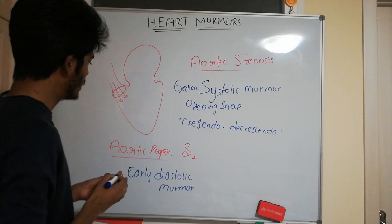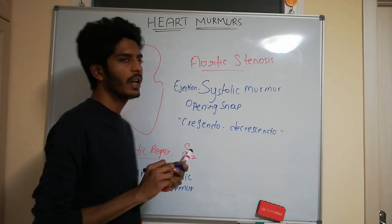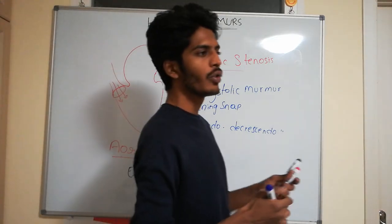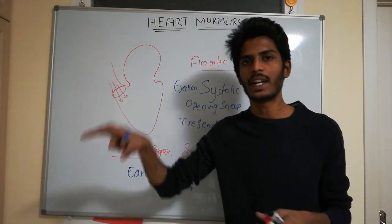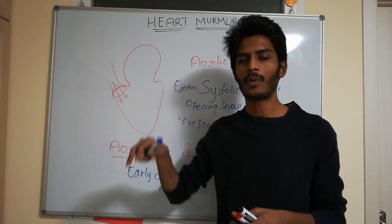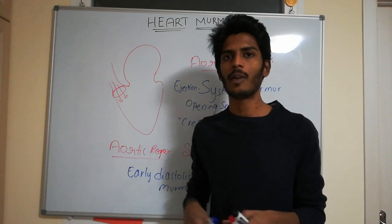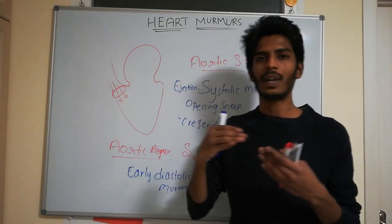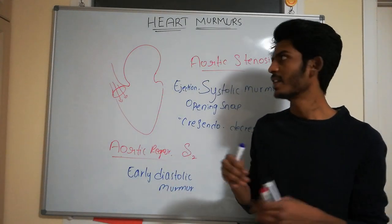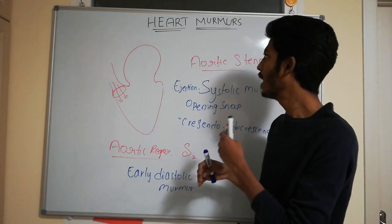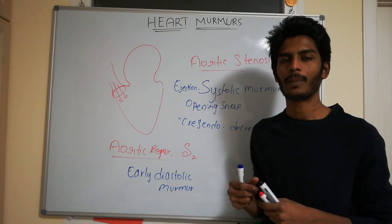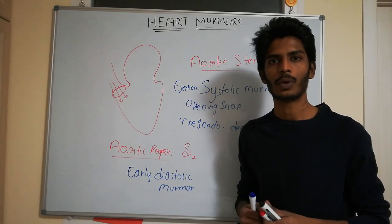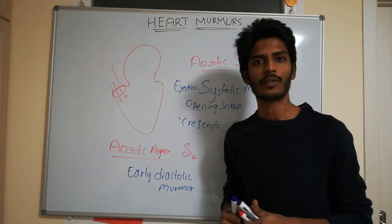There can also be murmurs associated with the tricuspid valve and pulmonary valve, but these have less clinical significance compared to the aortic and mitral valves. These are the important murmurs we need to know. Thank you for watching.